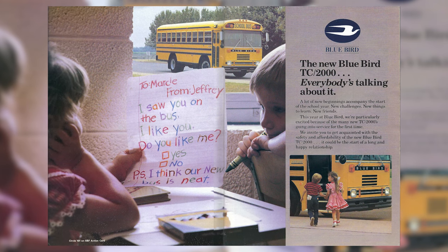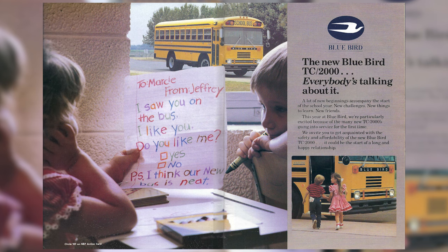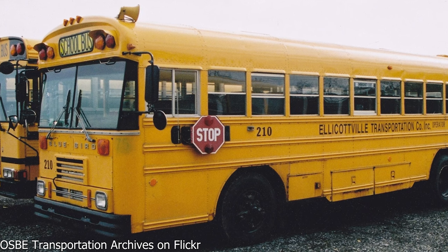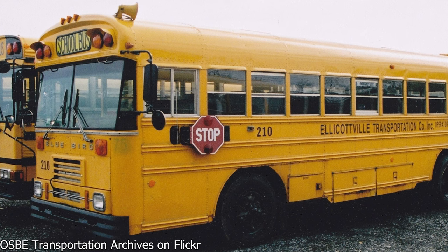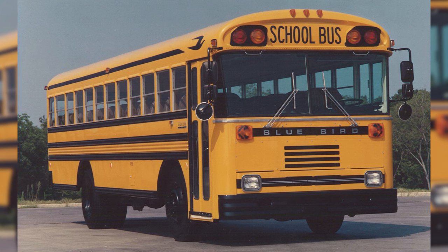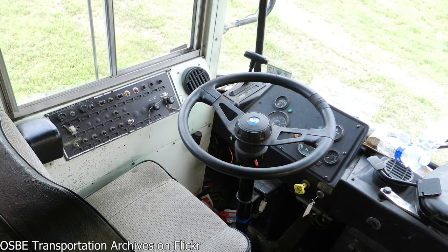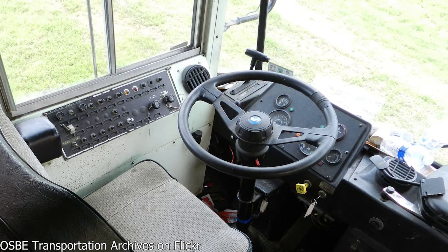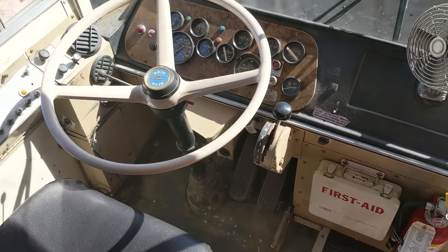The TC 2000 was introduced in 1987 as a cheaper alternative to the very popular Bluebird All-American, with a specific target audience of contractors and larger fleets. Since it was introduced in late 1987, 1988 was the first full model year. The TC was essentially a toned-down All-American — while it shared the same body, there were major differences to cut costs. The front went from quad to dual headlights and from a 14-slot grille down to an 8-slot grille.